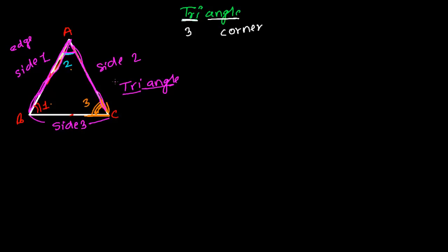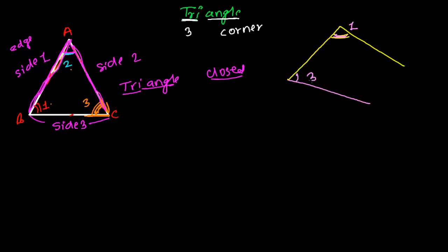I want to stress again: the figure should be closed. If we have three corners but the figure is not closed, it cannot be called a triangle. For example, suppose I have a figure with a first line segment and a second line segment meeting at corners — I can get three corners, but if the figure is open, that is not a triangle.